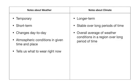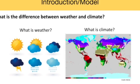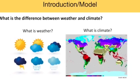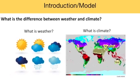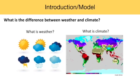Weather tells us what to wear right now, or whether to bring an umbrella, while climate tells us what to keep in our closets in the first place. Although the two concepts are closely related, the distinction between them is key for students to understand climate change.